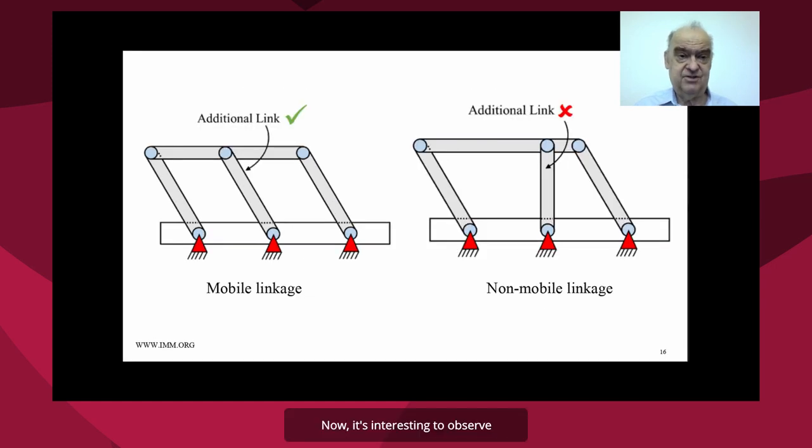Now it's interesting to observe that you can have additional links that are attached between the base and the mobile link. But you have to do it right if you want to allow freedom of motion. If you add a link between the base and the moving link that goes back and forth in the wrong way, it will lock up the mobile link. So that's an interesting observation. And we're going to take advantage of that observation when we design our lock.